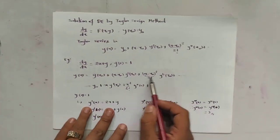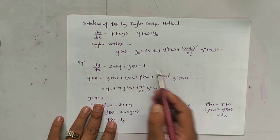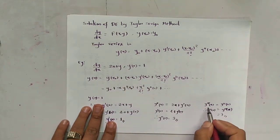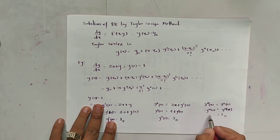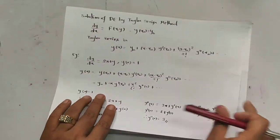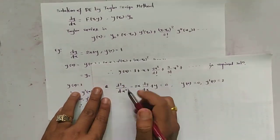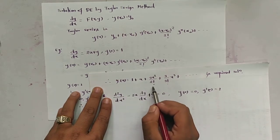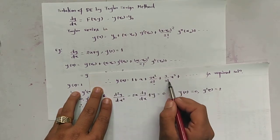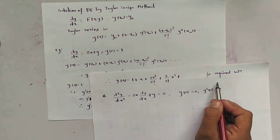Similarly, when the third derivative is taken, the constant term is removed and it becomes the second derivative. So y'''(x) = y''(x), meaning y'''(0) = 3. This equation can then be written as y(x) = 1 + x + 3x²/2! + 3x³/3! + ··· which is the required solution.